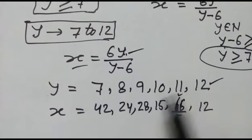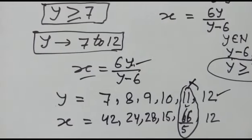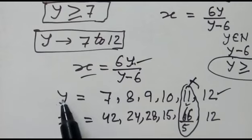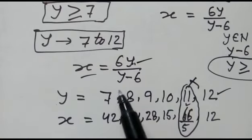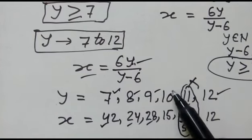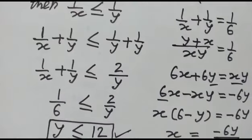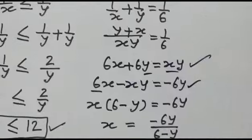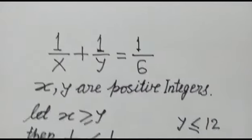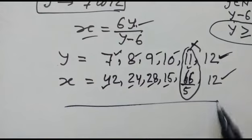Since x and y must be positive integers, the case y equals 11 does not satisfy the condition. The valid solutions are: y equals 7 with x equals 42, y equals 8 with x equals 24, y equals 9 with x equals 18, y equals 10 with x equals 15, and y equals 12 with x equals 12. These values satisfy the equation. Thank you friends.